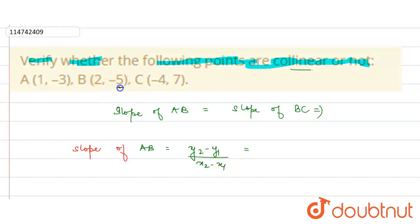For AB, Y2 is minus 5 and Y1 is minus 3, upon X2 minus X1, that's 2 minus 1. So minus 5 plus 3 upon 1, this equals minus 2. And similarly,